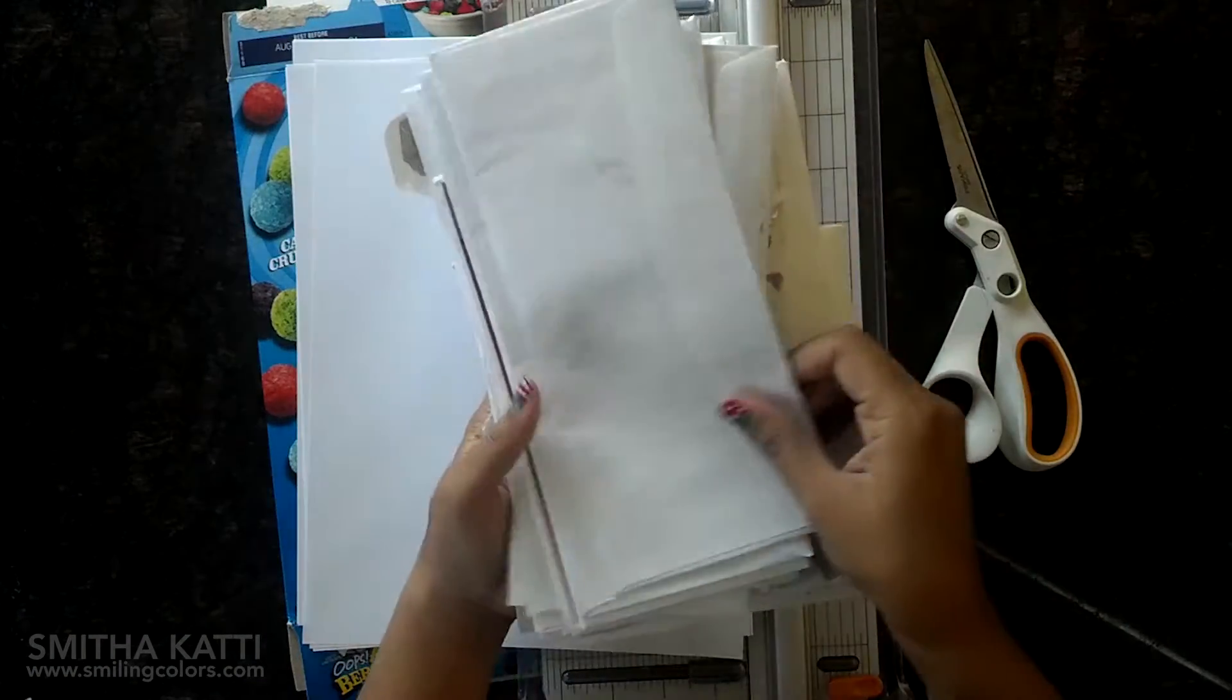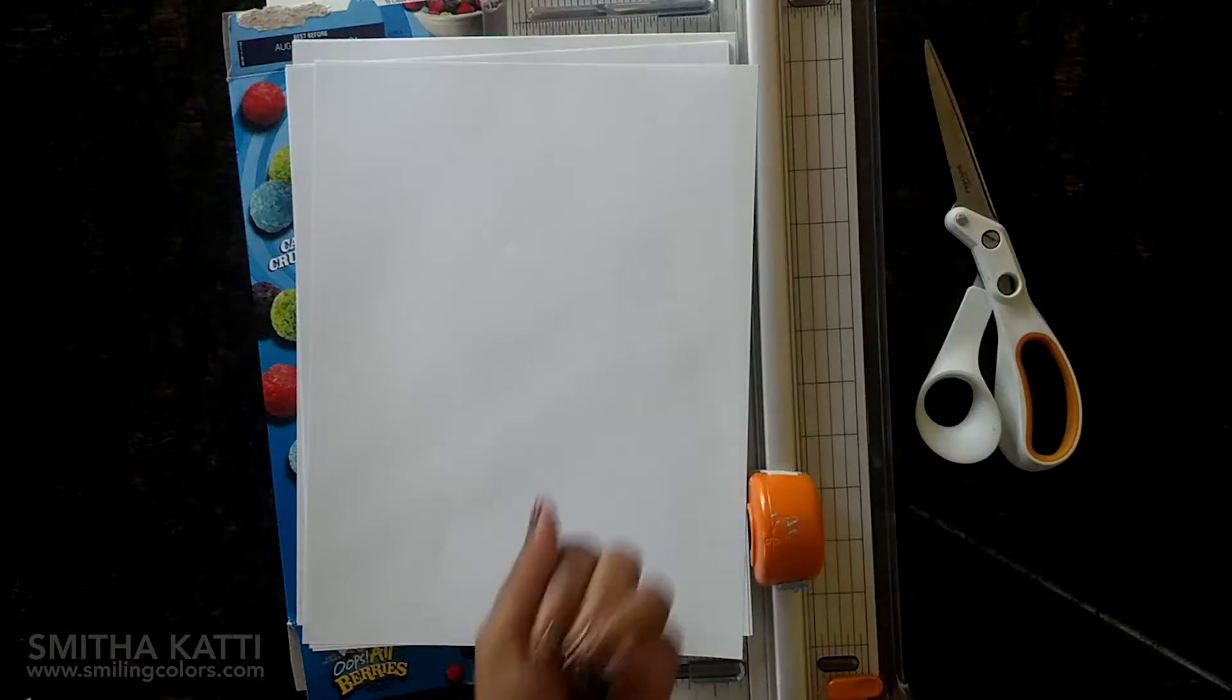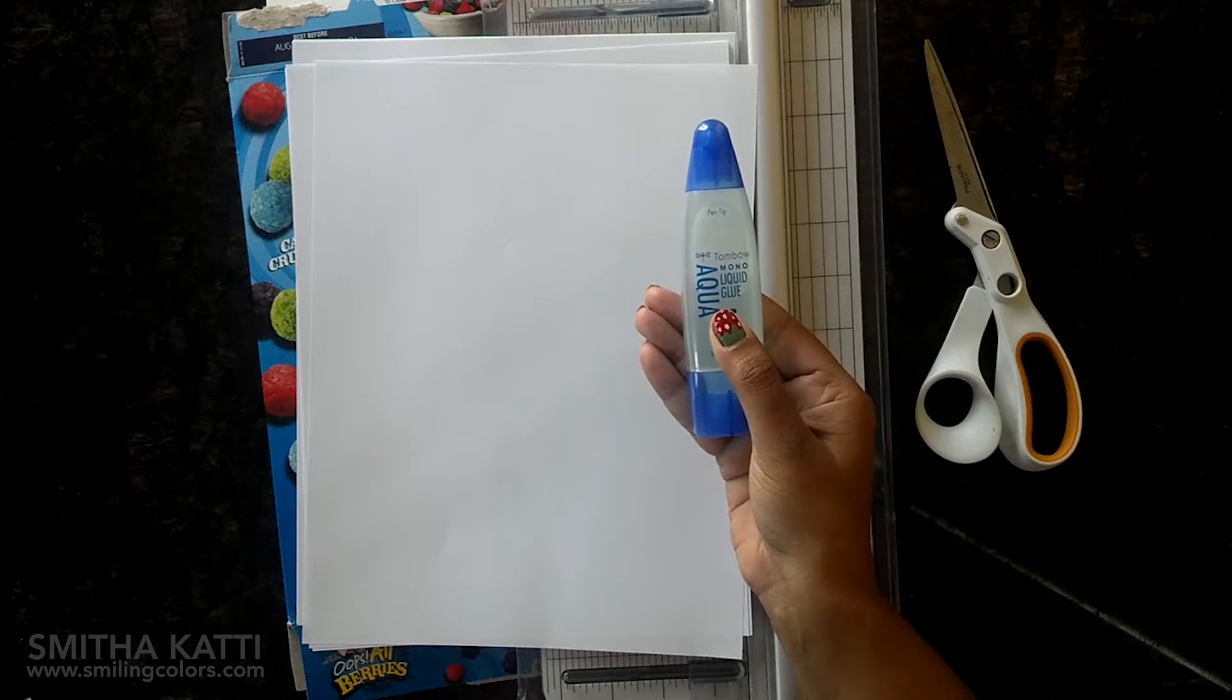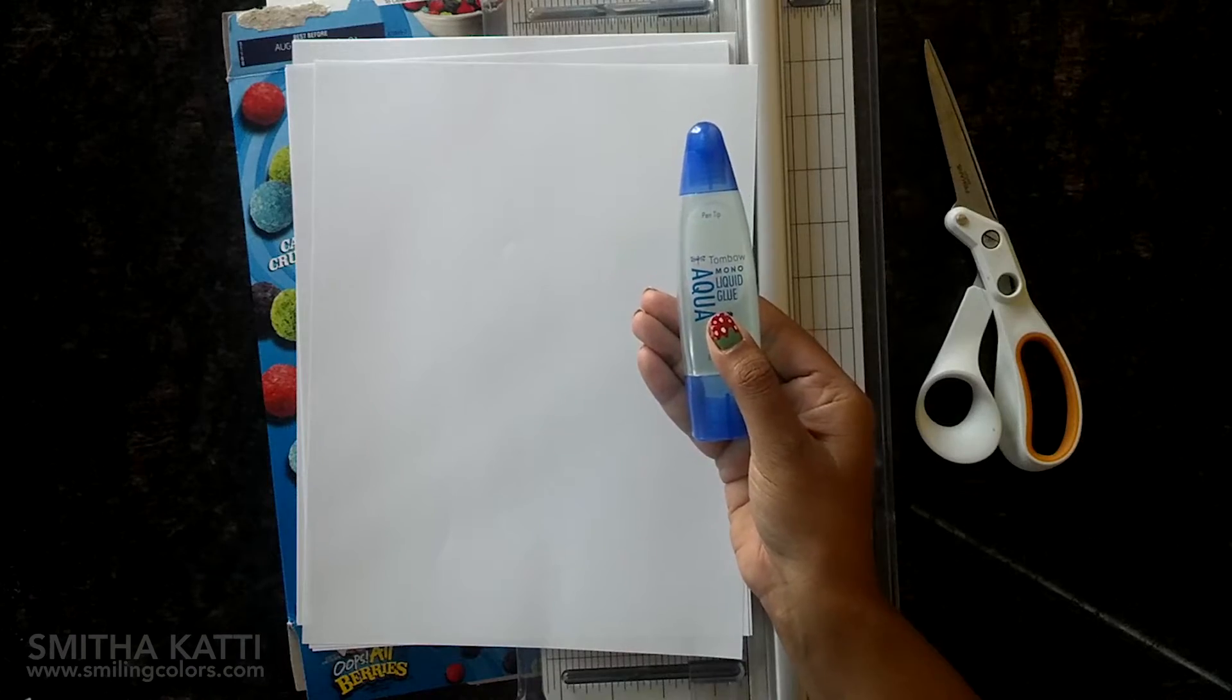You can also cut up envelopes from the junk mail you receive in the post, some binder clips and glue to glue everything together, a nice clear glue. I am using the Tombow Mona Aqua liquid glue here.